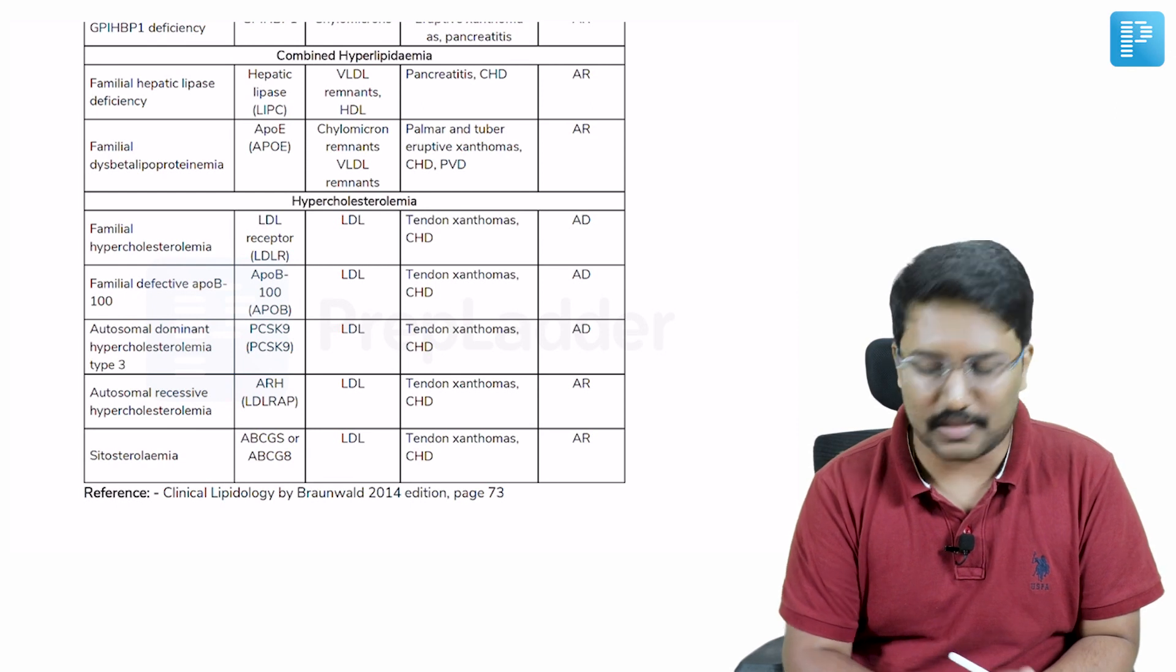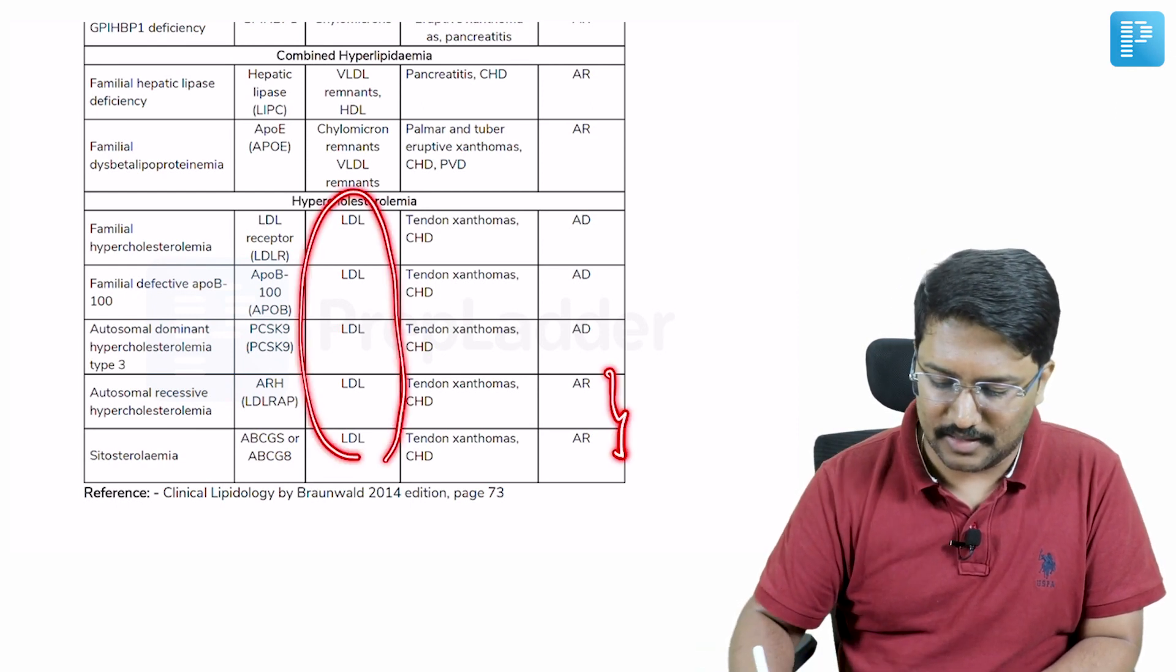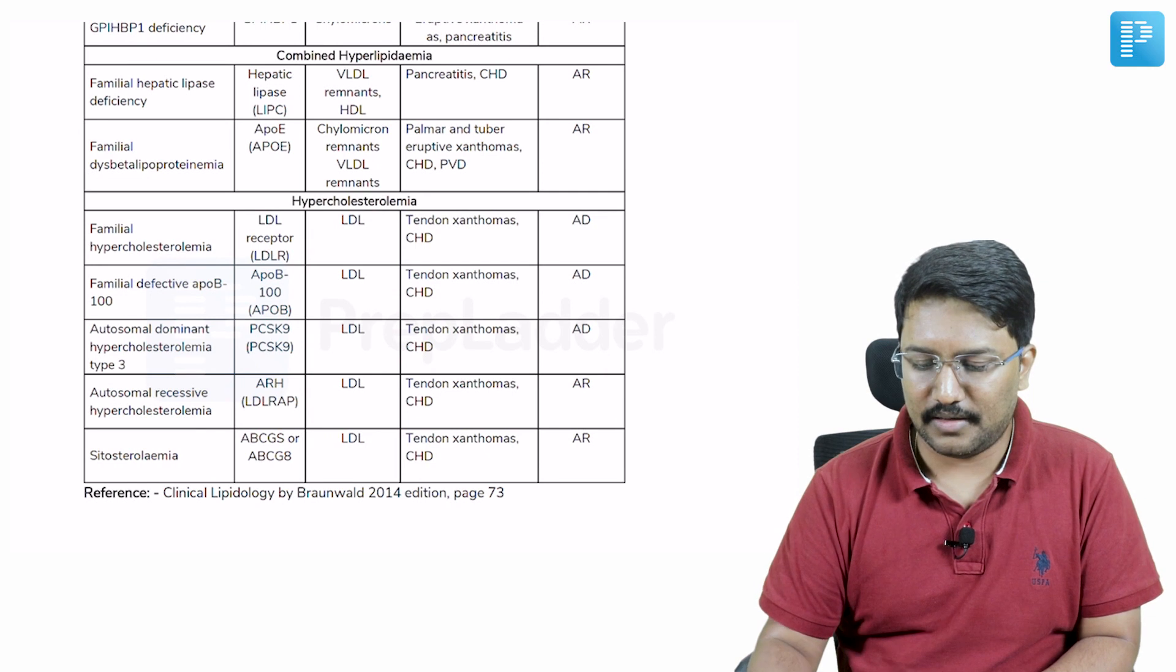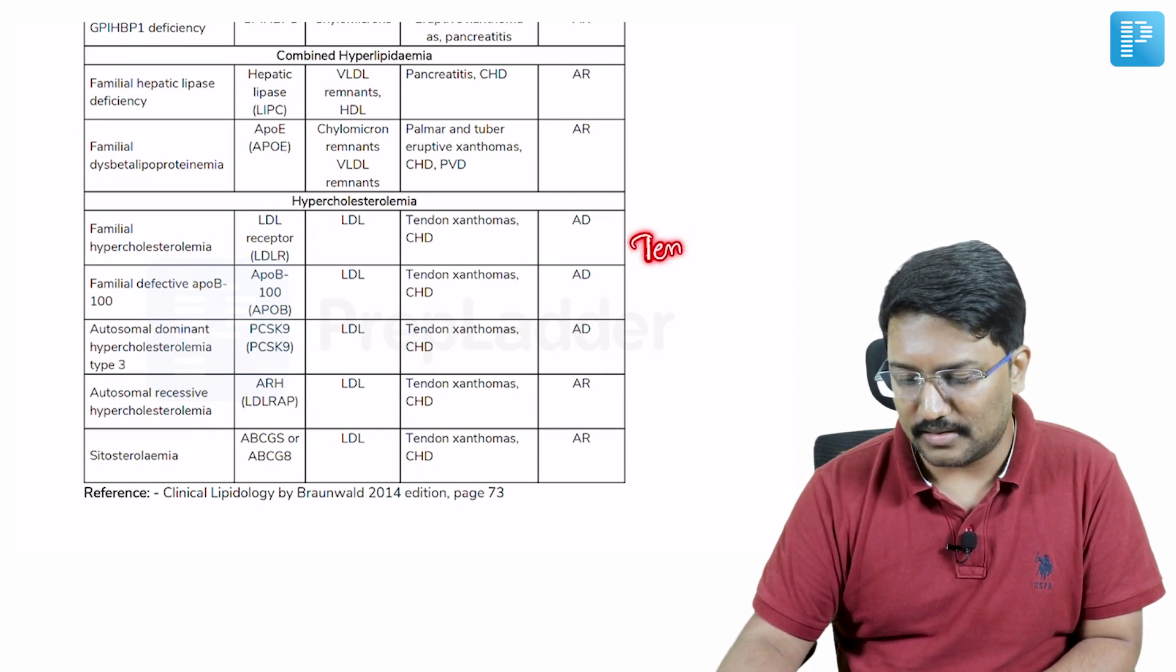The remaining two, autosomal recessive hypercholesterolemia and sitosterolemia, both are autosomal recessive. In all these cases,